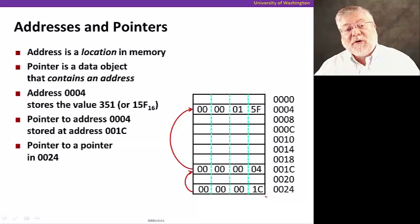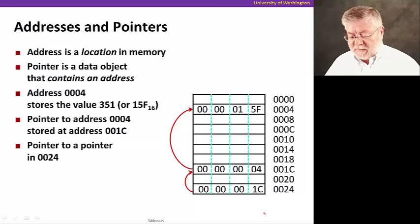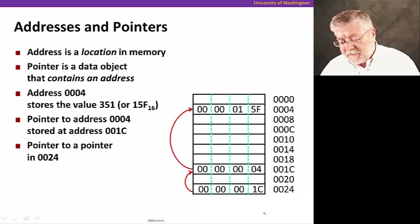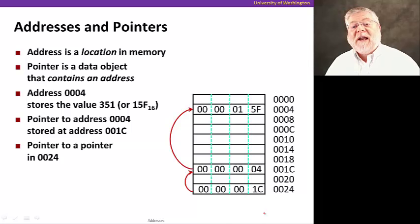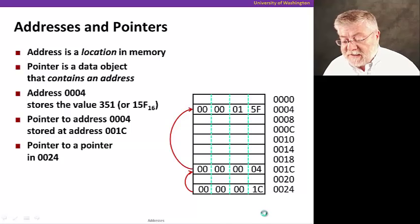If I had interpreted it as just a number, what number would it be? It would be the hex number 1C, which is 16 plus 12 or 28 decimal, and not an address. So it's purely an interpretation question. Will I interpret this value as a pointer and therefore an address to another location? Or will I interpret it as a value? That's the distinction between addresses and pointers.